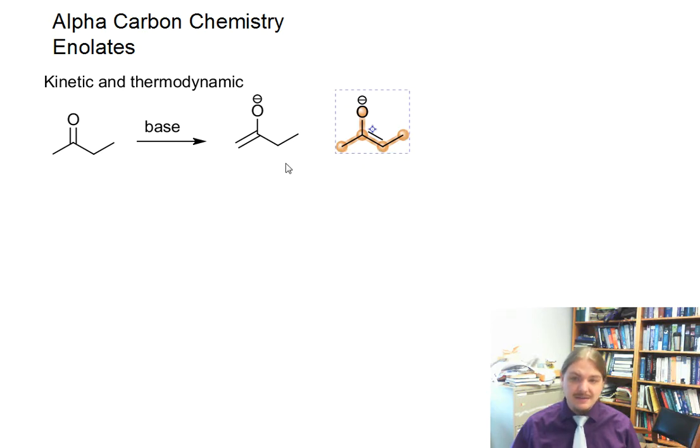First, we can form an enolate at the less substituted position and an enolate at the more substituted position. It happens that the enolate at the less substituted position is the kinetic enolate. It forms more quickly because it's less substituted, less steric hindrance.